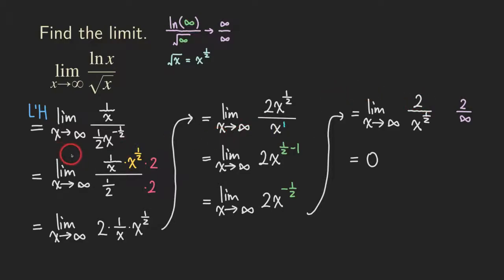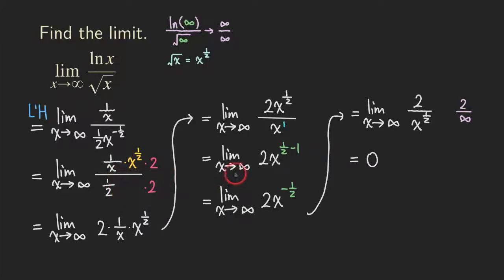That looks like a lot of steps, but actually the calculus step is really just at the beginning — applying L'Hôpital's rule and analyzing the form for the limit. All the other steps are just basic algebra. The key takeaway is that after you apply L'Hôpital's rule you may get a messy expression, and in that case don't immediately apply L'Hôpital's rule again. You should simplify the expression first. Sometimes you only need to apply it once, and algebraic manipulation can carry you the rest of the way to a non-indeterminate form.